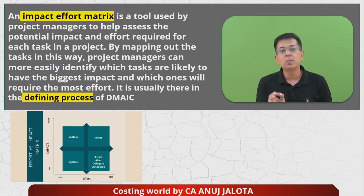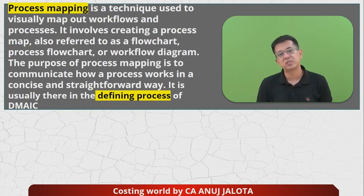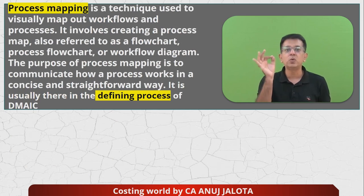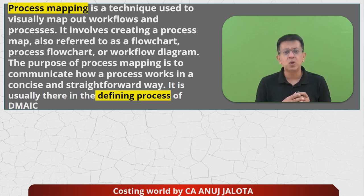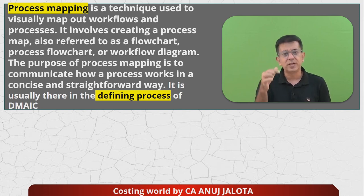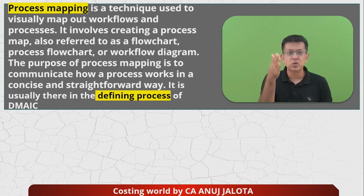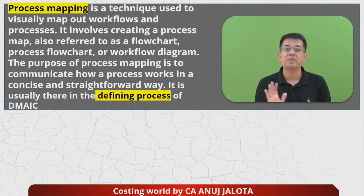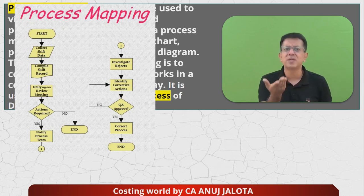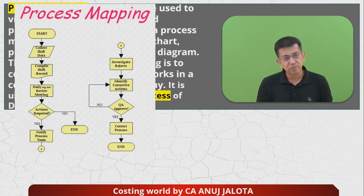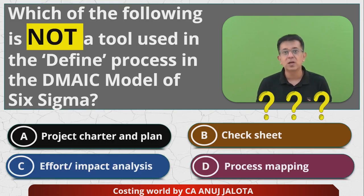Process Mapping is also in the defining stage. It is a flow chart made to show how each task should be done — which activity comes first, which next, which can be done in parallel. In IT companies, whenever software is developed, they use process mapping to plan the sequence of activities. A simple flow chart is shown on screen. Since this is used before the project starts, it belongs to the defining stage.